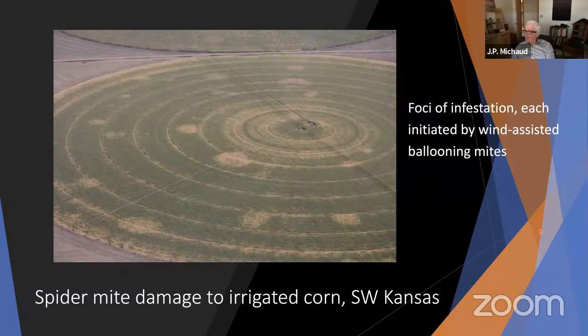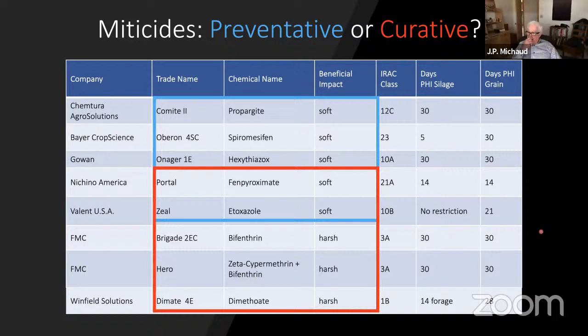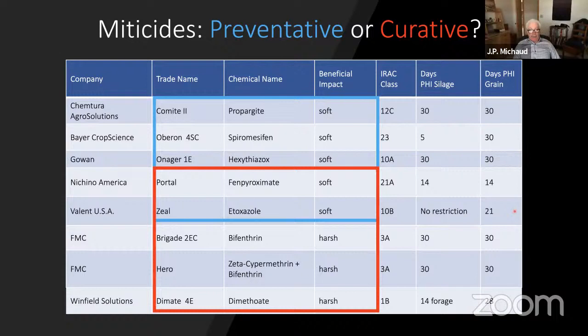All of these miticides have different properties, and they vary a lot in the life stages of the mites they control and in their non-target effects on beneficials — which is very important to consider. We really want to stay in the blue box, because no material is going to kill all the mites. We need the predatory mites to survive and clean up whatever else is left. We also don't want to rely too much on any one material because spider mites can evolve resistance so quickly. The most desirable combination is materials that are curative and also easy on beneficials.